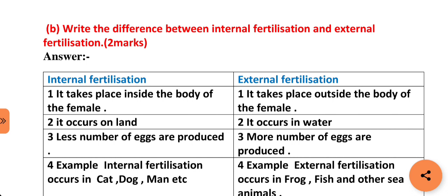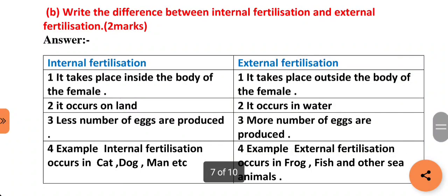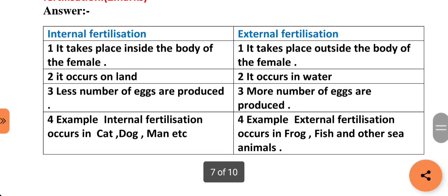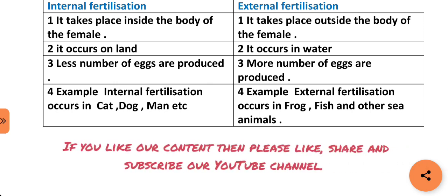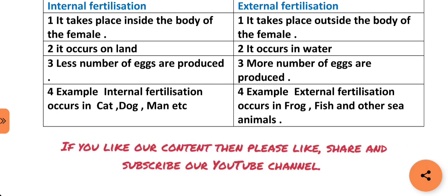Examples of internal fertilization are cat, dog, man etc. Whereas external fertilization occurs in frog, fish and other sea animals. So students, these were the question answers of weekly test series 1 which we have discussed today. In our next video, we will discuss class 10th science question answers of weekly test series 2. Thanks for watching our video.